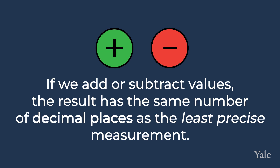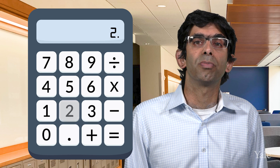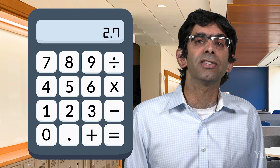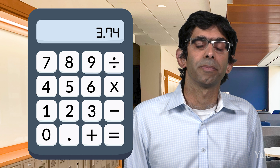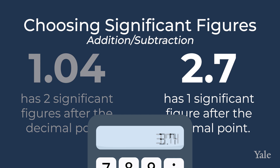If we add or subtract values, the result has the same number of decimal places as the least precise measurement. For example, if we add 1.04 plus 2.7, our calculator says the answer is 3.74. 1.04 has two significant figures after the decimal, while 2.7 has one significant figure after the decimal. This means our answer needs one significant figure after the decimal and is 3.7.